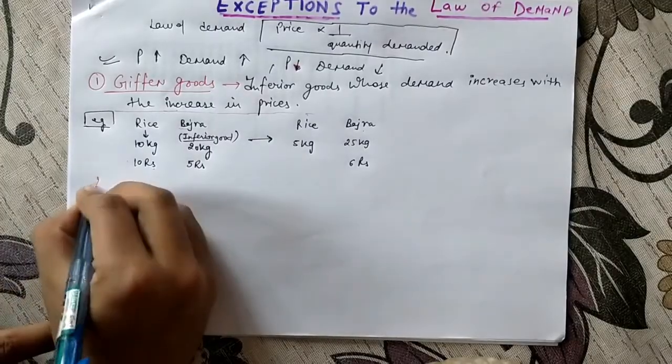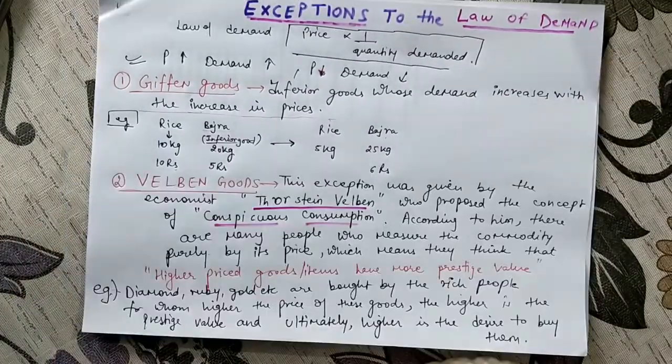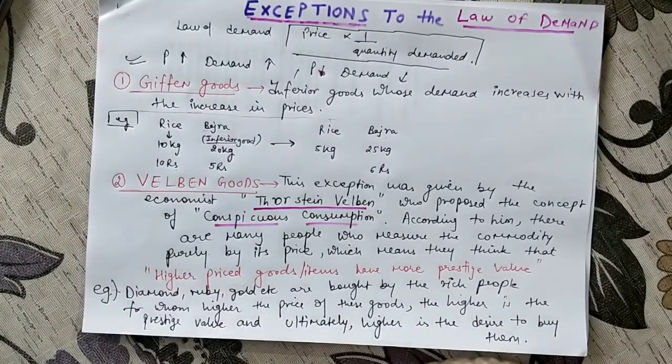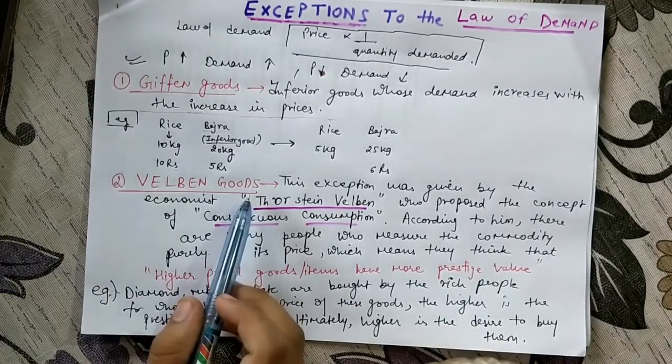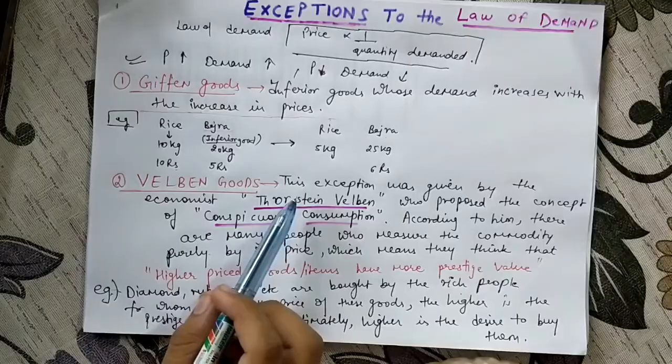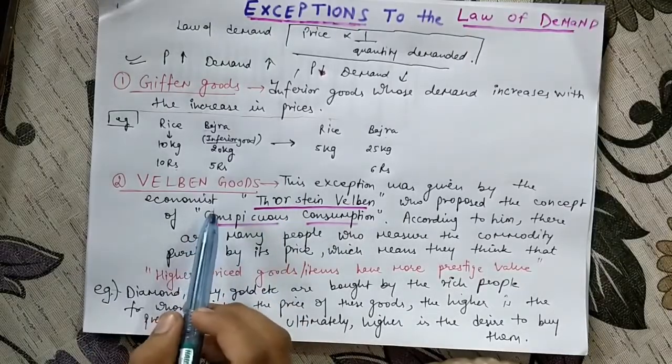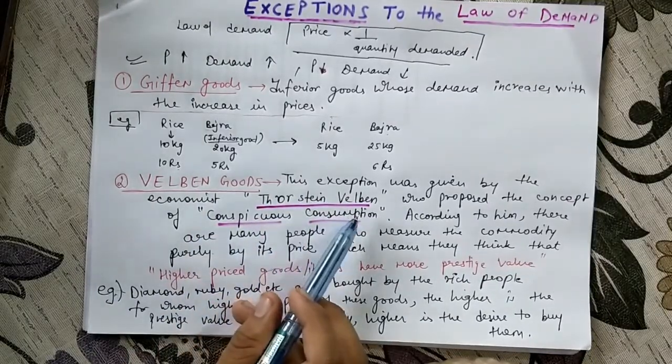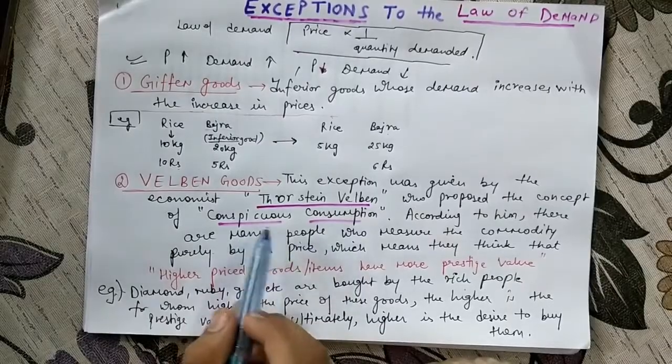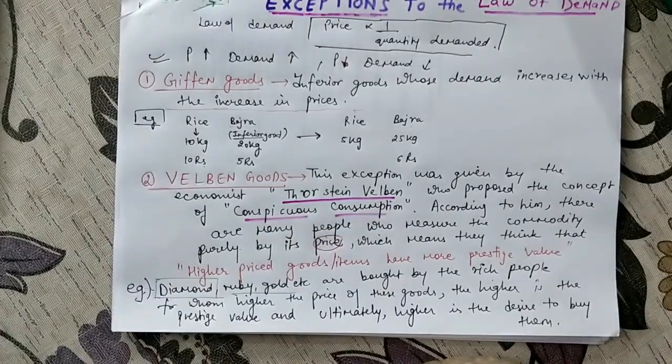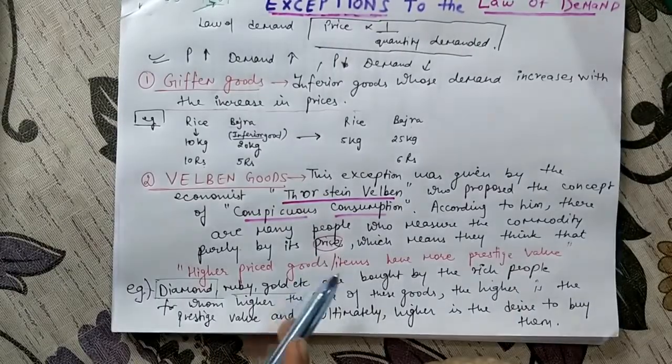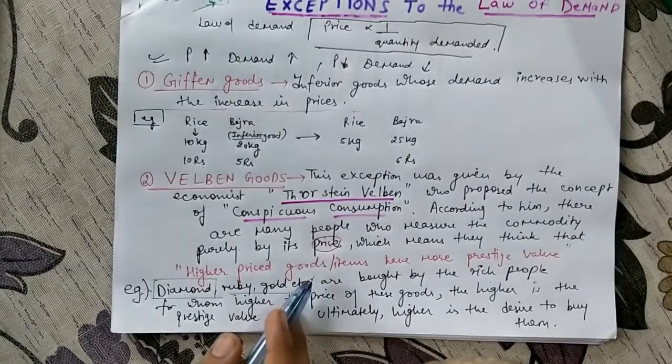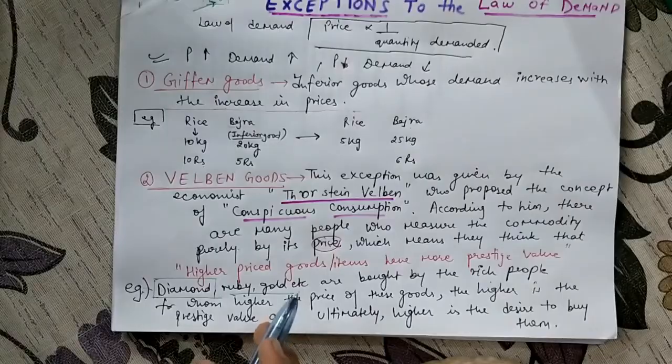Now the second exception is Veblen goods. This exception was first of all given by an economist known as Thorstein Veblen, who proposed the concept of conspicuous consumption. According to him, there are many people who measure the commodity purely by its price, which means that higher is the price of the good, the more prestigious or the more valuable the item will be.